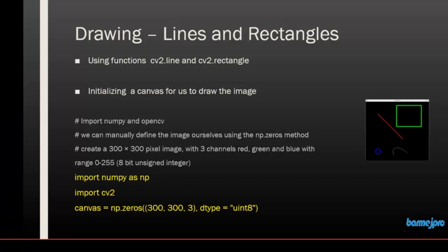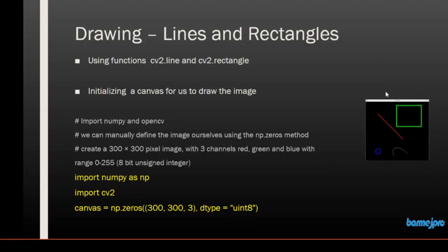Hello and welcome back. In this session we will deal with drawing shapes inside an image using the OpenCV library. The two functions we will be using are cv2.line and cv2.rectangle. Before we proceed with drawing a line and a rectangle inside an image, we need to create a canvas to work on, so we will manually define an image using a method called np.zeros.